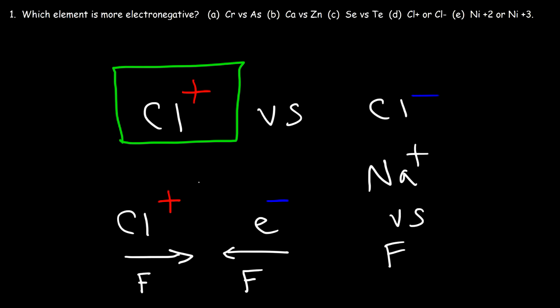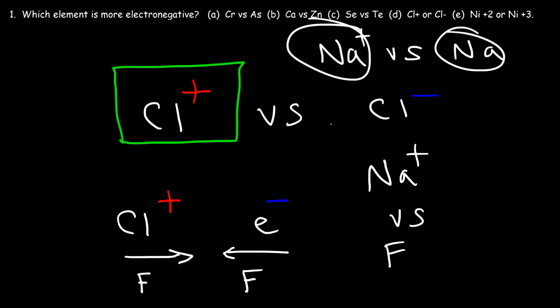When you compare, say, the sodium ion versus the sodium atom — when the element is the same — we should expect the ion with a positive charge to be more electronegative than the neutral atom. But if the element is not the same, then it's a whole different story.